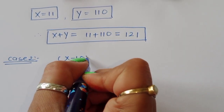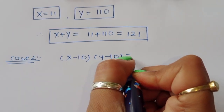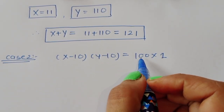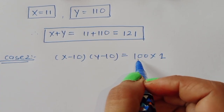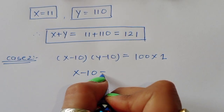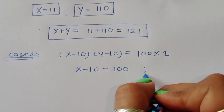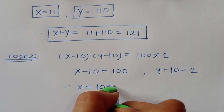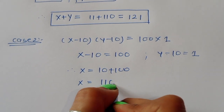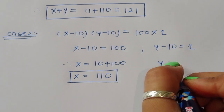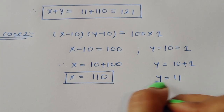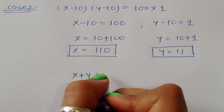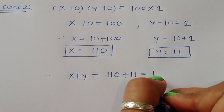Case 2: (x minus 10)(y minus 10) equals 100 times 1. So x minus 10 equals 100 and y minus 10 equals 1. Therefore x equals 110 and y equals 11. From case 2, x plus y equals 110 plus 11, which equals 121.